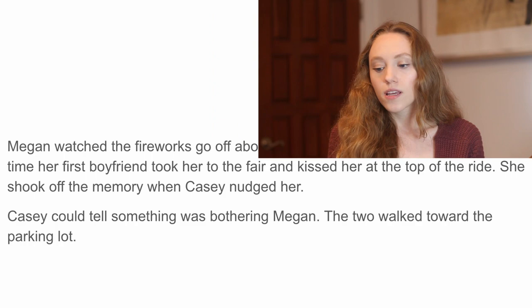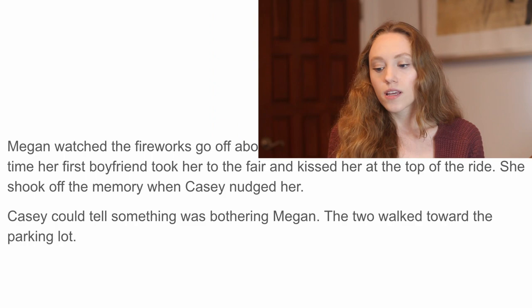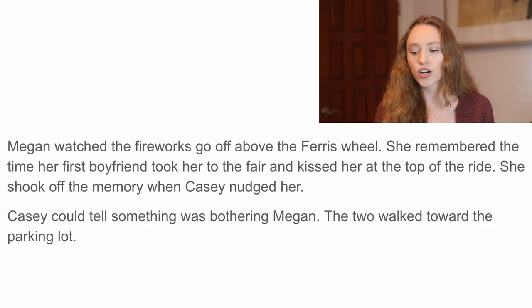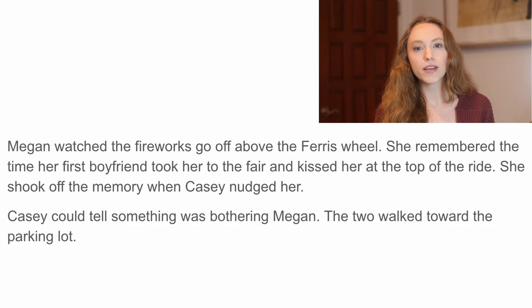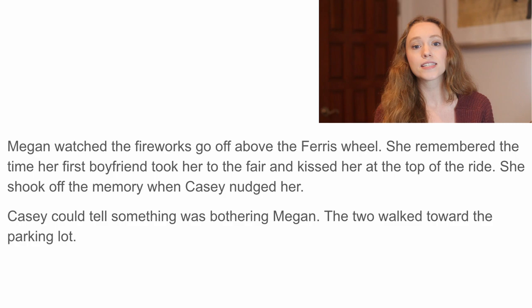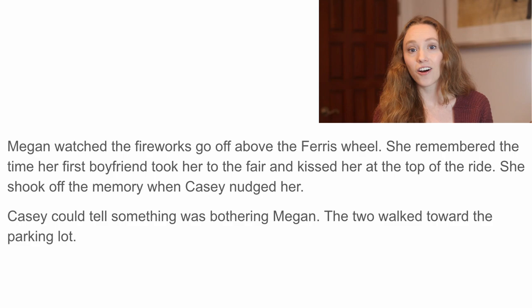Here's an example: "Megan watched the fireworks go off above the Ferris wheel. She remembered the time her first boyfriend took her to the fair and kissed her at the top of the ride. She shook off the memory when Casey nudged her. Casey could tell something was bothering Megan. The two walked toward the parking lot." Can you see the moment where we depart from Megan's point of view? That line — "Casey could tell something was bothering Megan" — is actually something Megan would not have access to. We're getting into Casey's mindset, so we need to revise that line and stick only with Megan.